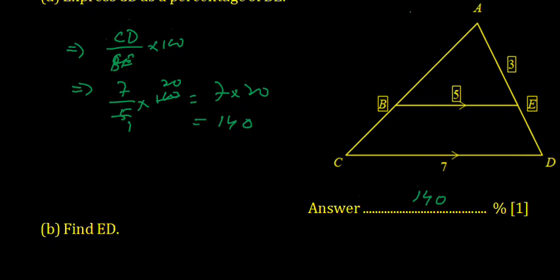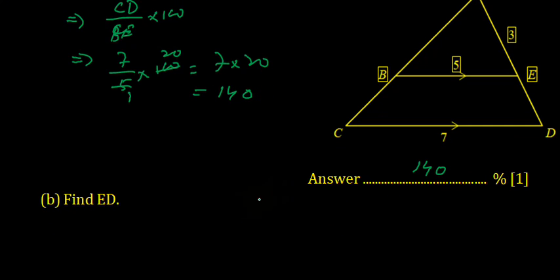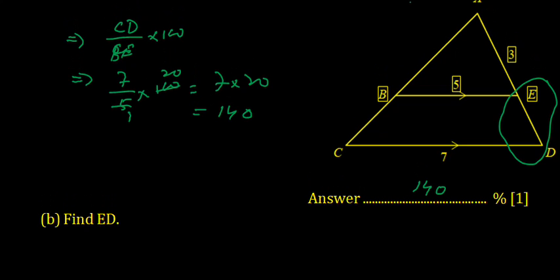Moving to part (b), we have to find ED. When a triangle is divided by a parallel line, the two triangles become similar. These angles are the same, and the vertical angle is common for both, so they are similar.